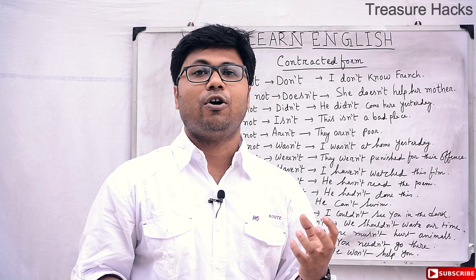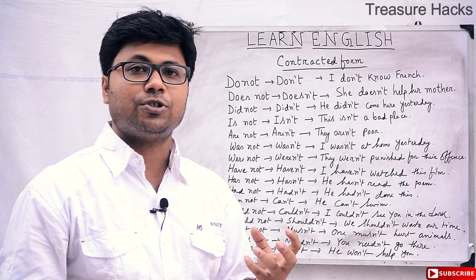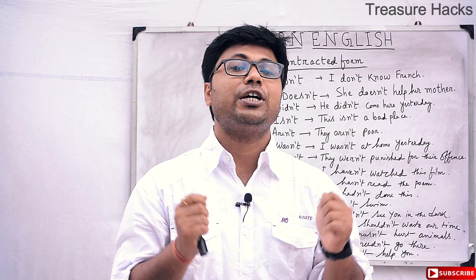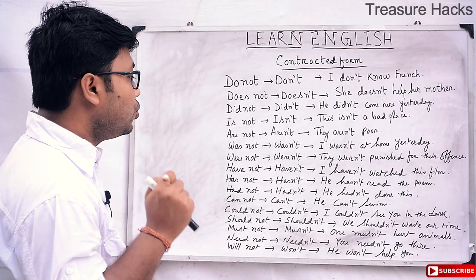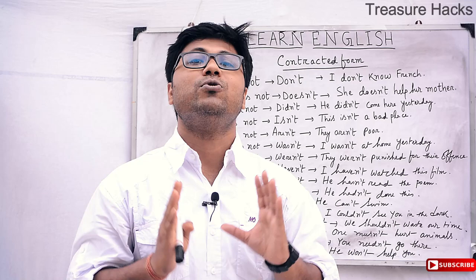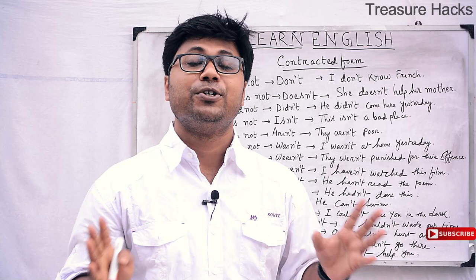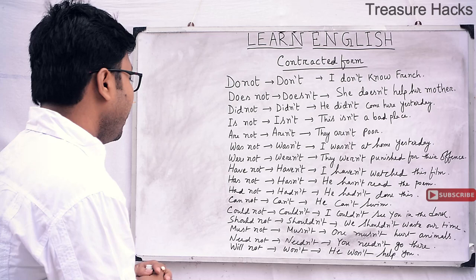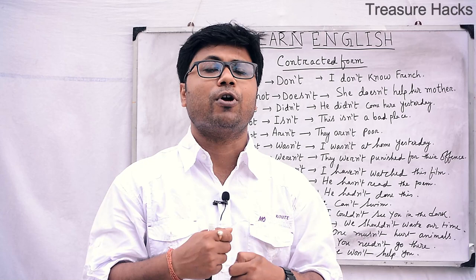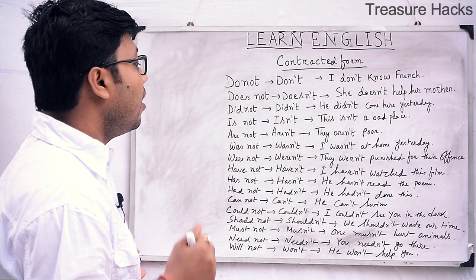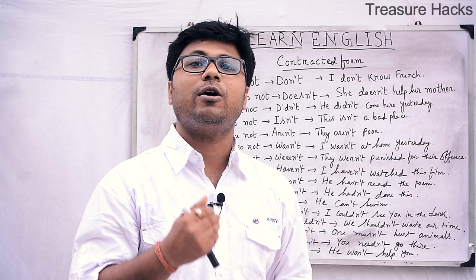Next, 'should not' — we use 'should' for advice or obligation, and 'should not' in contracted form is 'shouldn't'. For example: We shouldn't waste our time. Time is a precious thing — time and tide wait for none. Next, 'must not' in contracted form is 'mustn't'. For example: One mustn't hurt animals.